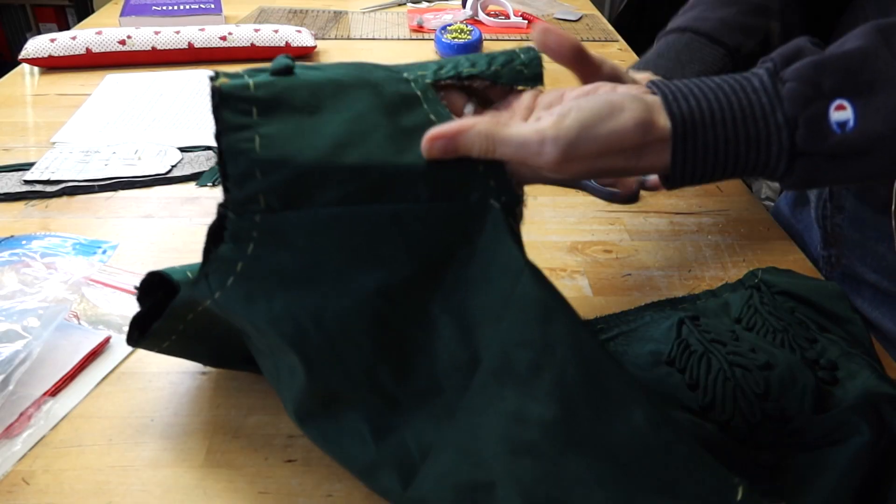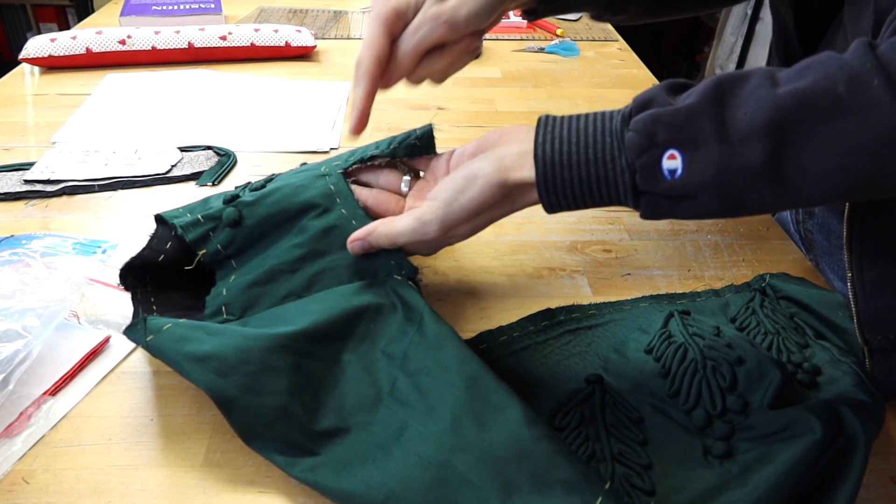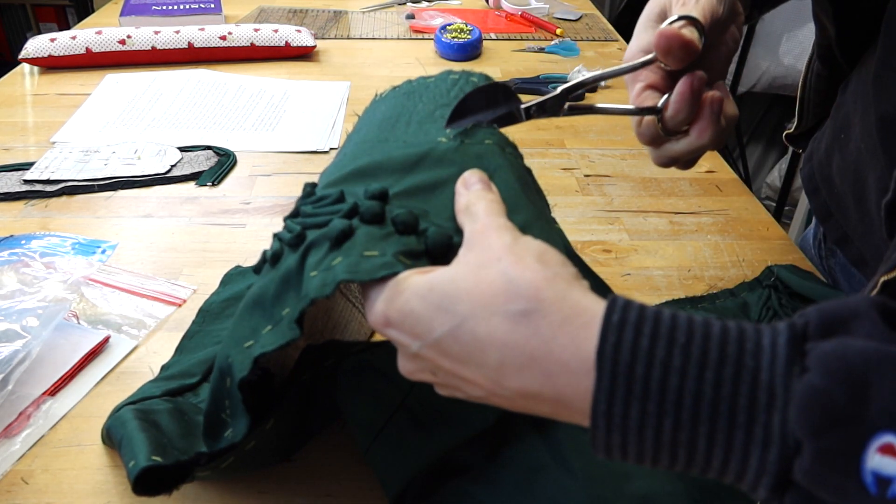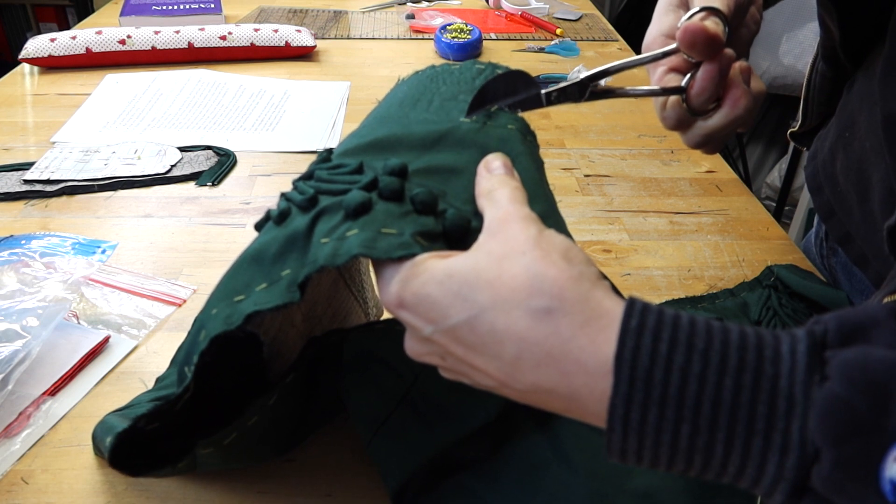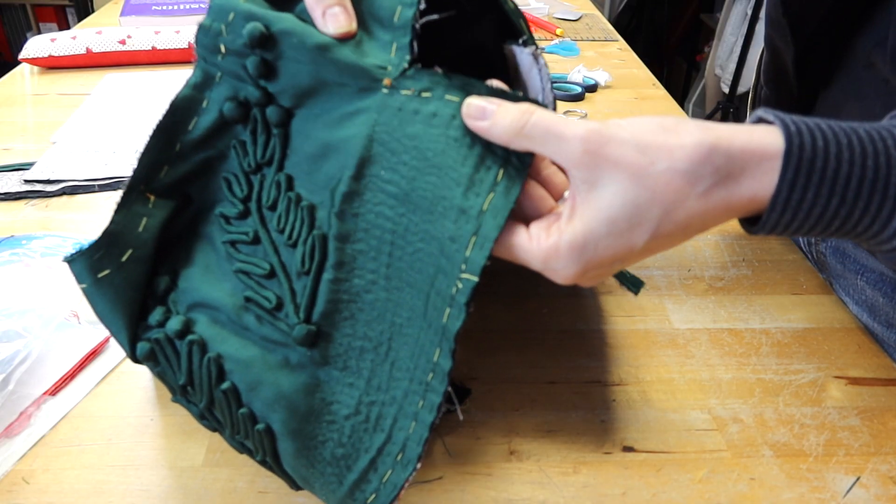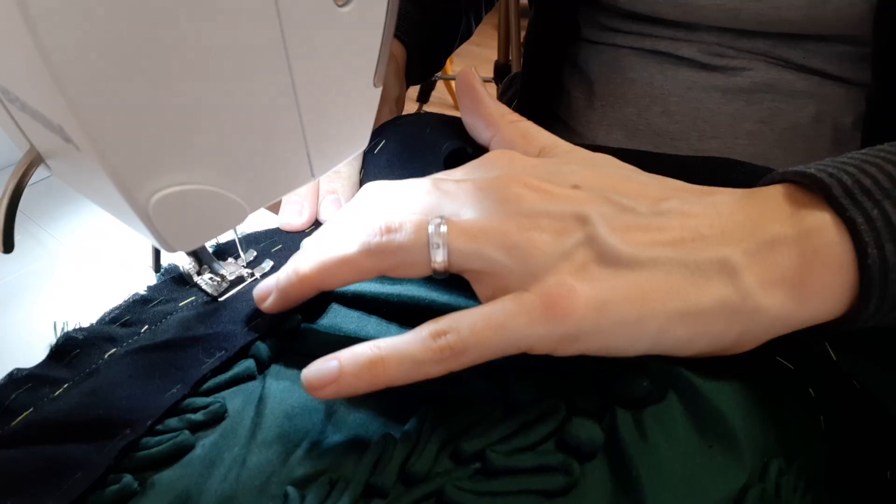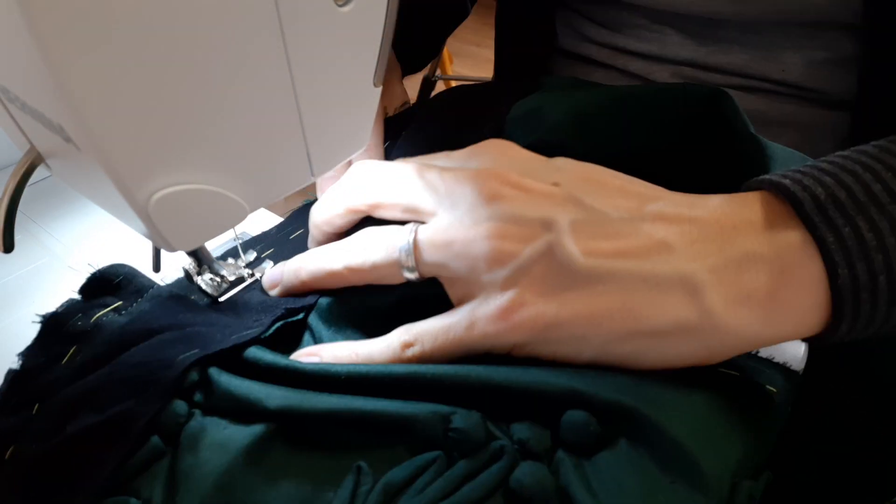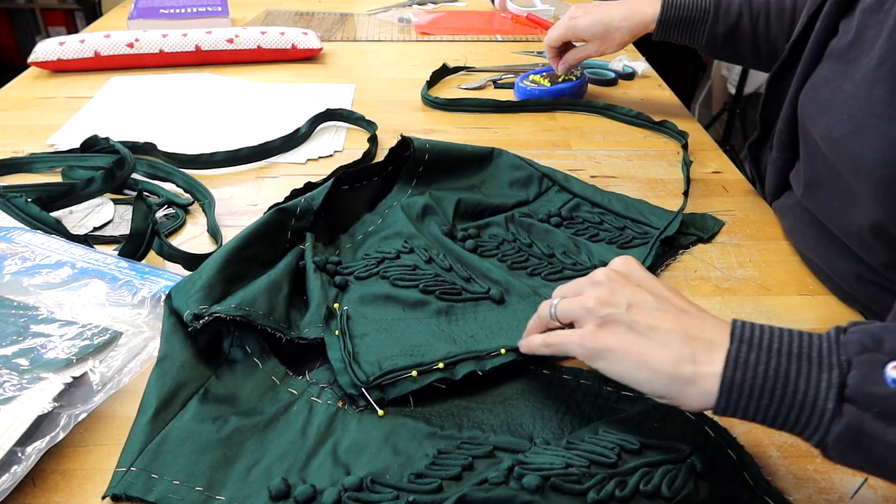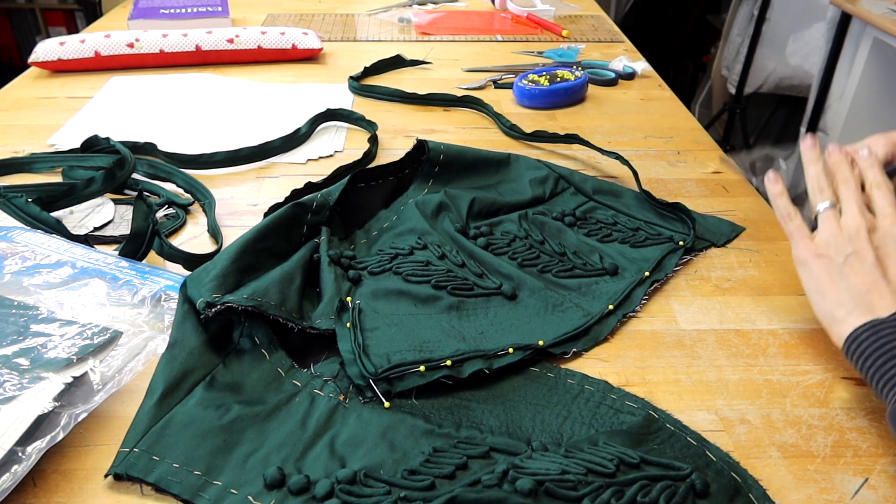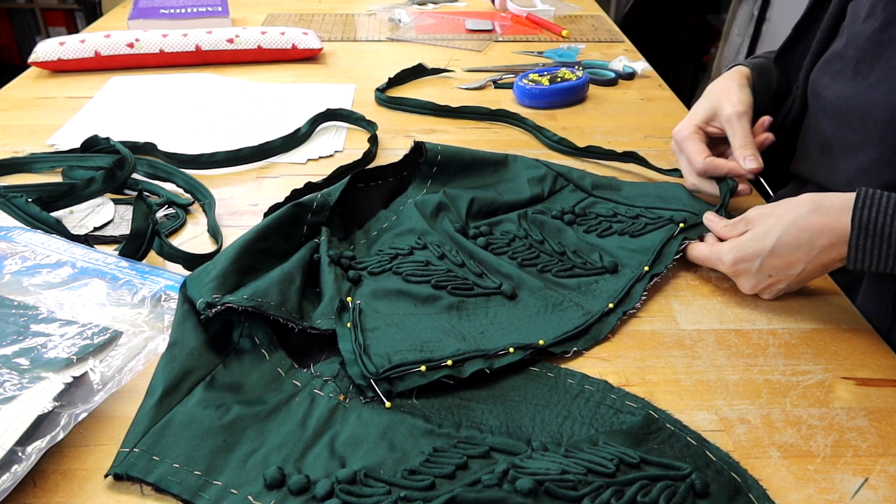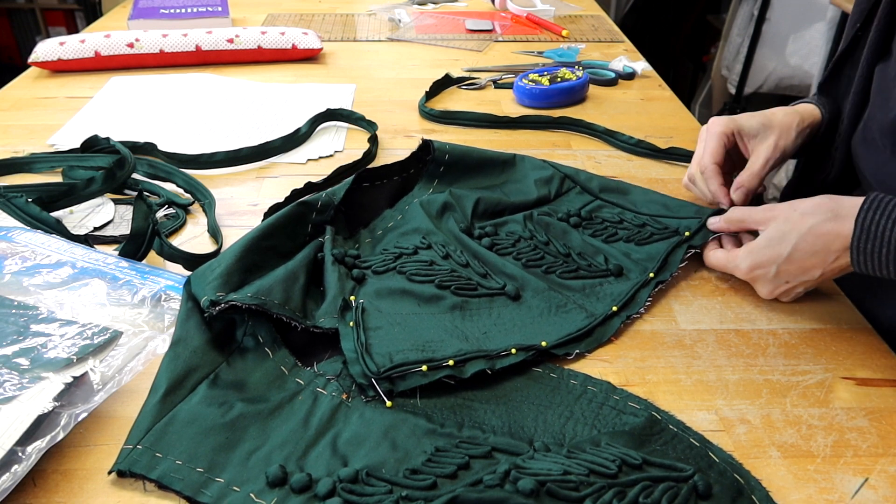I stitched on the belt next. Where the lapel and the neckline meet, the seam allowance needs to be cut. Before that I reinforced that point with stay stitching. This way the layers can be pressed in different directions. I pinned the double piping all around the edge, from lapel edge to lapel edge. I also basted the piping in place and then used my machine to sew it in place.